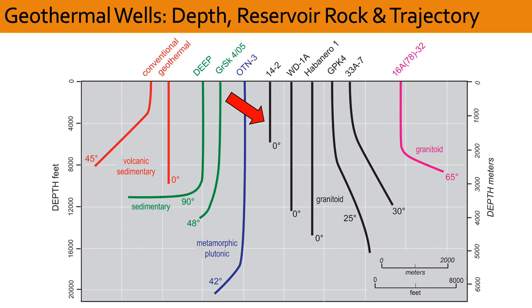WD-1A, to the right, was drilled at Kakkonda, Japan, and it is notable for having the hottest bottom hole temperature of 500 degrees C. Habanero 1 is one of the wells drilled in the Cooper Basin project in Australia, and GPK-4 is a deep well drilled at Soultz in eastern France. The last of the black wells, 33A-7, was drilled at COSO in California. This group of wells all emphasize that there is drilling experience in hard crystalline rock, but in all cases the degree of deviation is modest, no more than 30 degrees from the vertical.